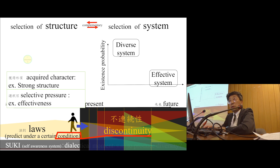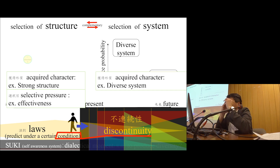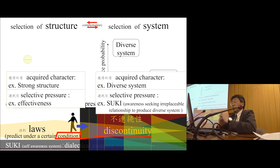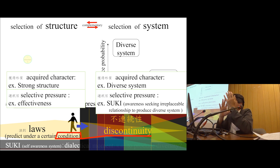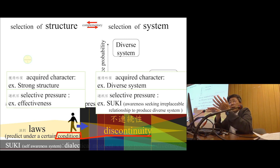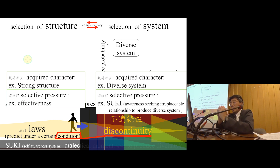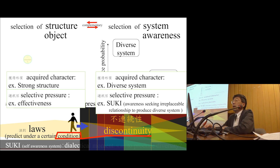This is feeling, not philosophy. I think that the diverse system is an acquired character. And what is a certain pressure? I just imagine — I feel that it's suki. I think that object is better understood as structure, and awareness is better than the system.